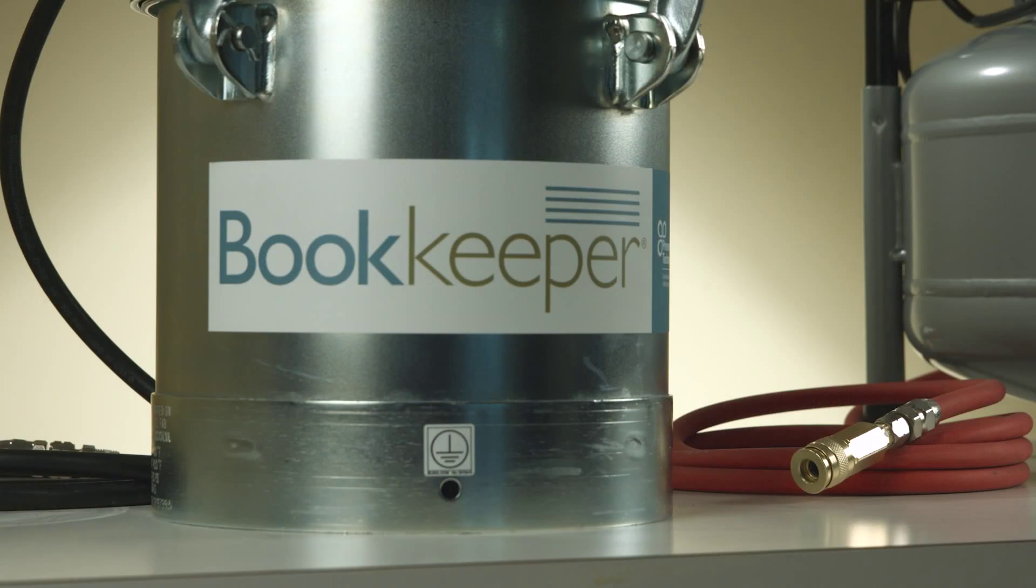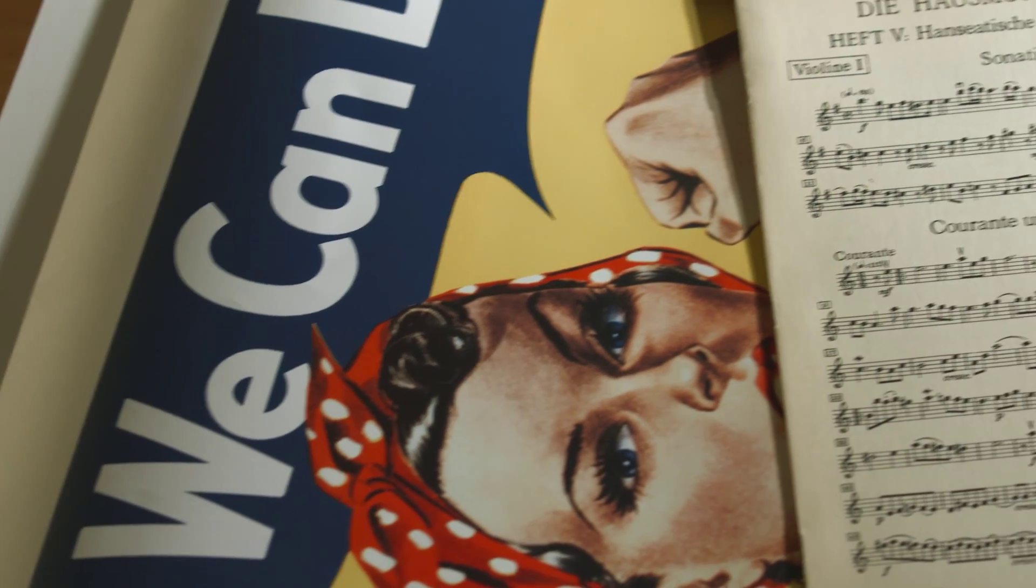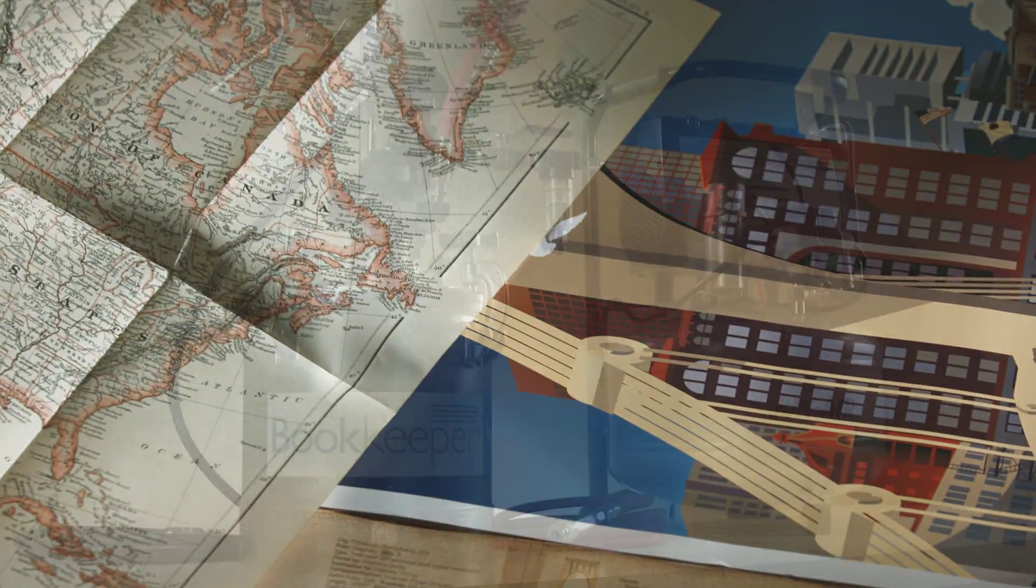The system consists of a spray tank, a spray gun, and an air compressor. The bookkeeper spray system is ideal for use with oversized documents, maps, newspapers, and other items requiring individual attention.